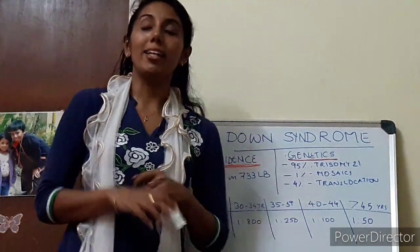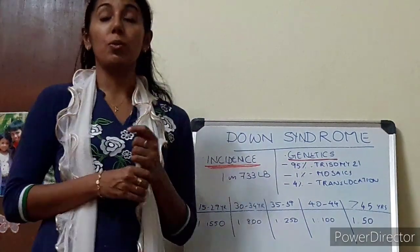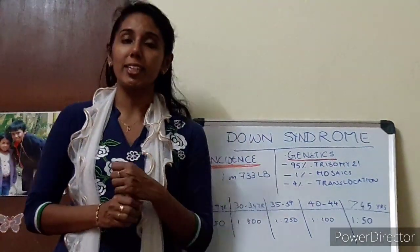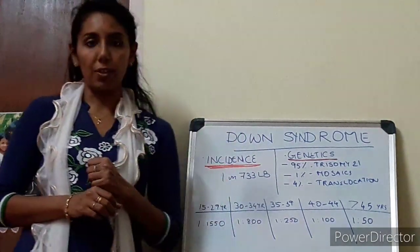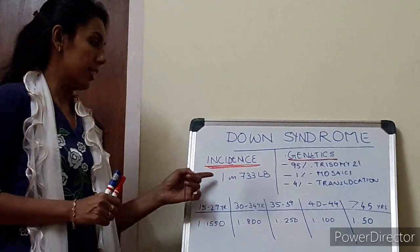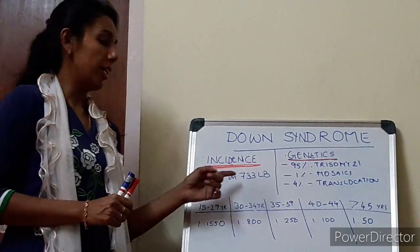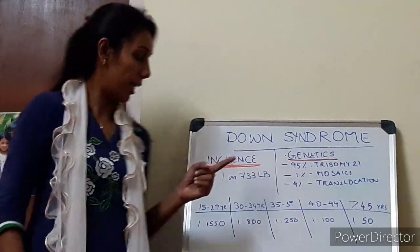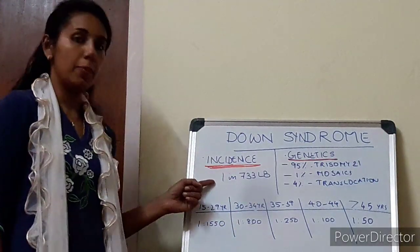Down syndrome, as you all know, is one of the most common chromosomal abnormalities seen in children. Coming to the incidence, it is 1 in 733 live births.